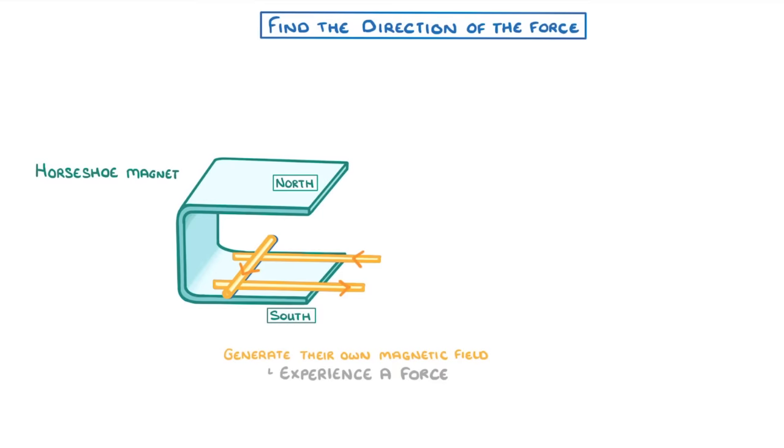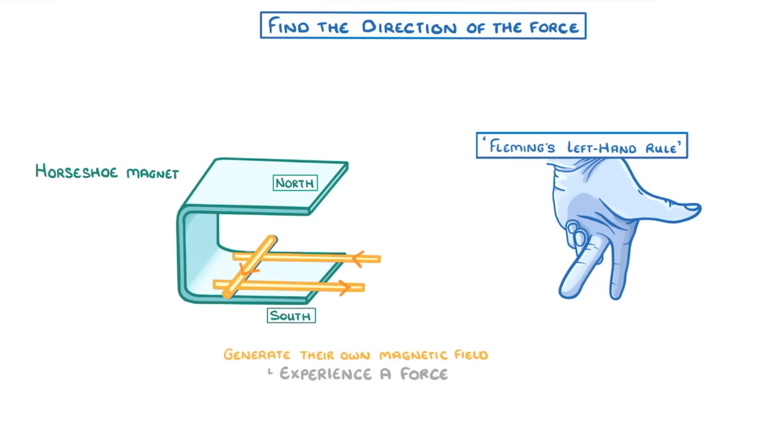In order to figure out which direction the force will be in, we have to use Fleming's left-hand rule again. As the magnetic field is pointing downwards from north to south, so will our first finger, and as the current is flowing through this rail towards us, we have to orient our second finger towards us. And hopefully, your thumb will now be pointing to the right, which is the direction of the force.